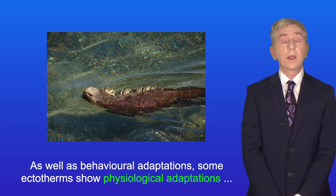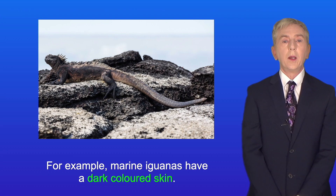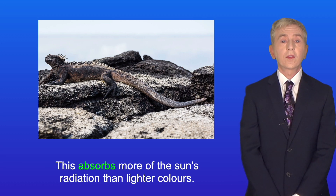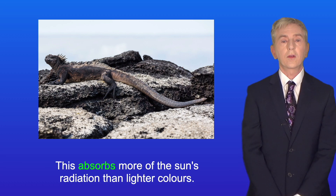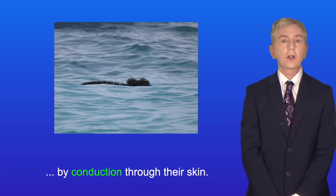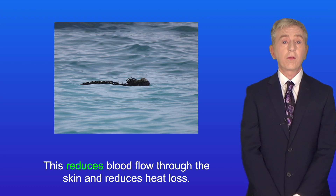As well as behavioral adaptations, some ectotherms show physiological adaptations to control their core body temperature. For example, marine iguanas have dark colored skin, which absorbs more of the sun's radiation than lighter colors. When marine iguanas are in the sea, they lose heat to the water by conduction through their skin. In this case, their heart rate slows down, which reduces blood flow through the skin and reduces heat loss.